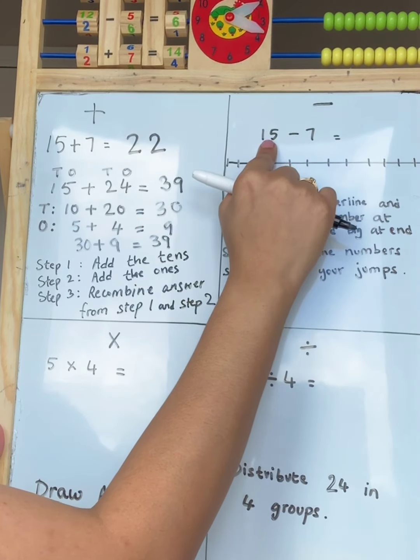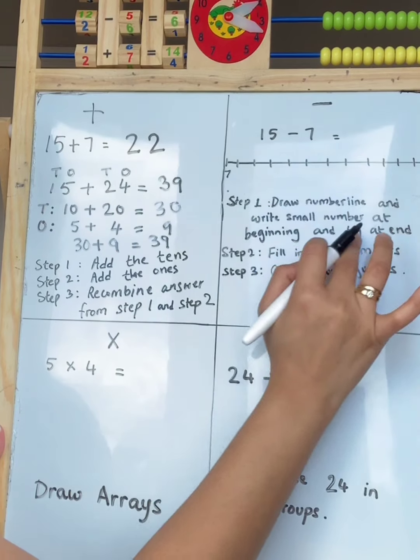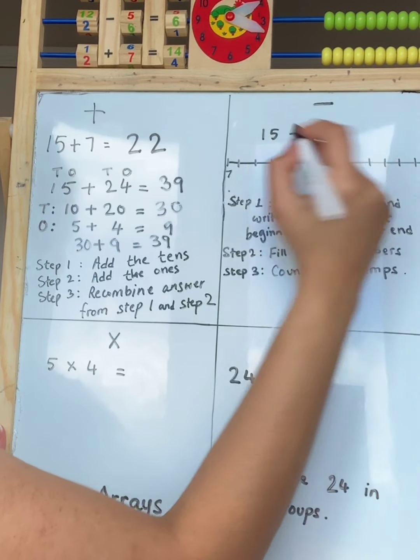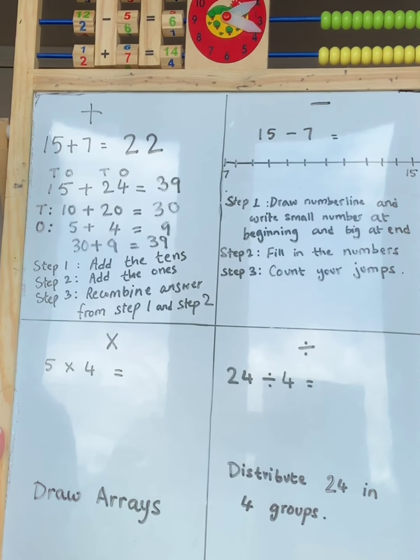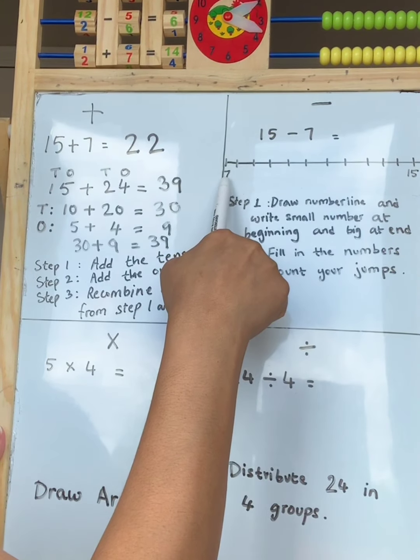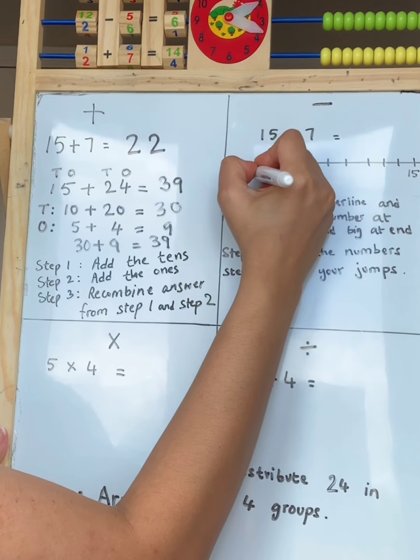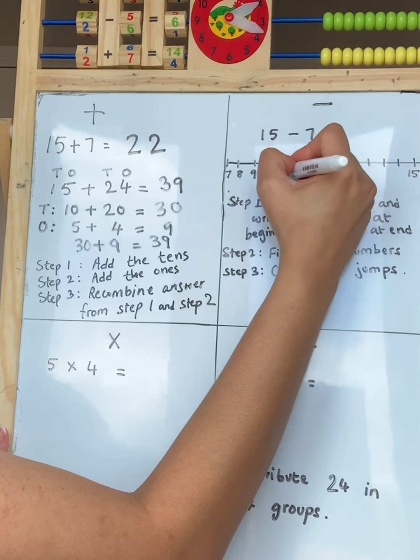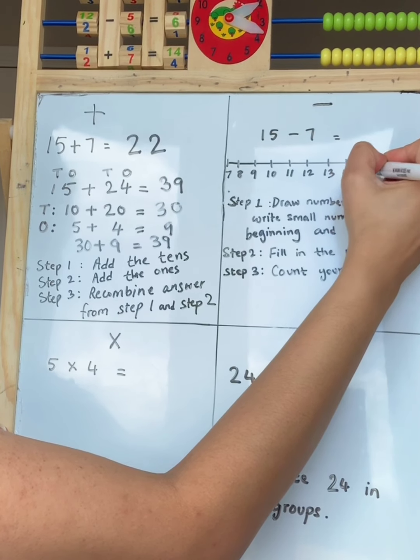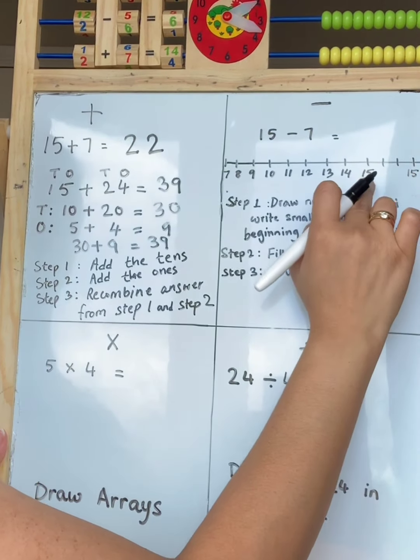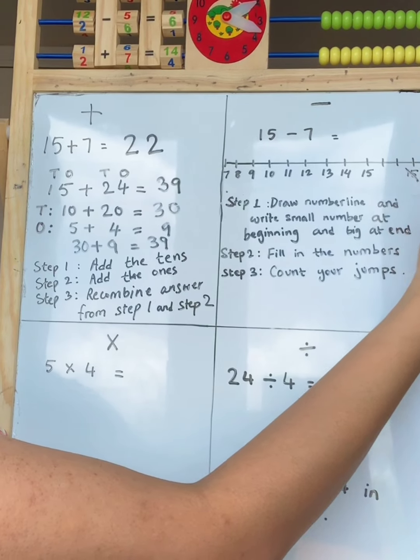Then write the small number at the beginning. Which one is the small number? 15? No. 7 is the small number. I'm going to write 7 at the beginning. And the big number at the end. Big number at the end. Step 2. Fill in the numbers. So I'm going to go from 7 all the way to 15. I'm going to fill up the numbers. 7, 8, 9, 10, 11, 12, 13, 14, 15. Oh! Stop! We've got 15. From 7 all the way to 15. Because we've already got 15, I'm going to cross this one out.